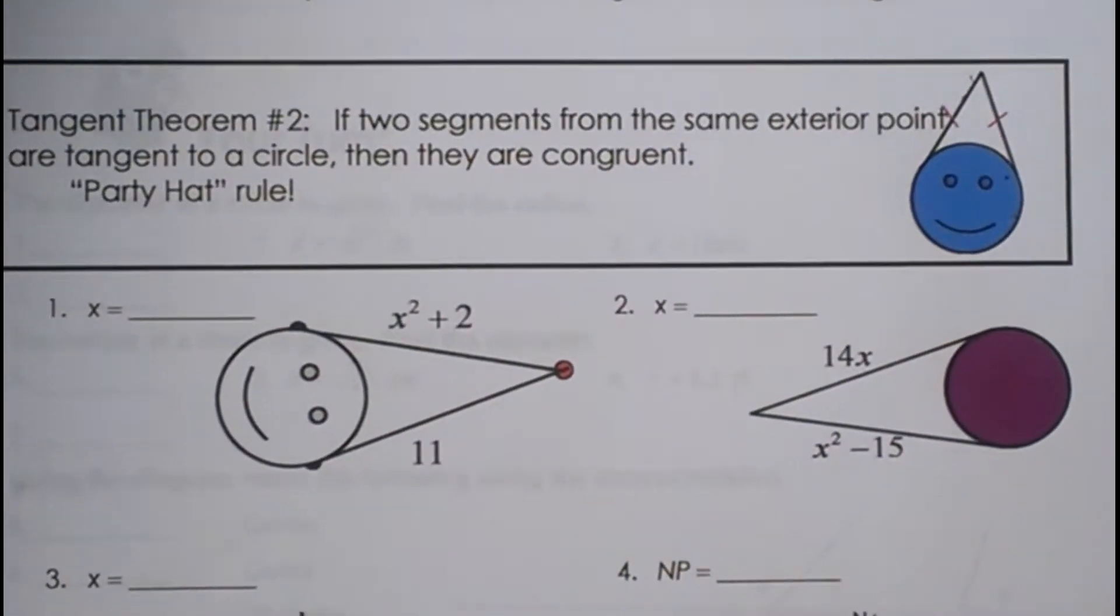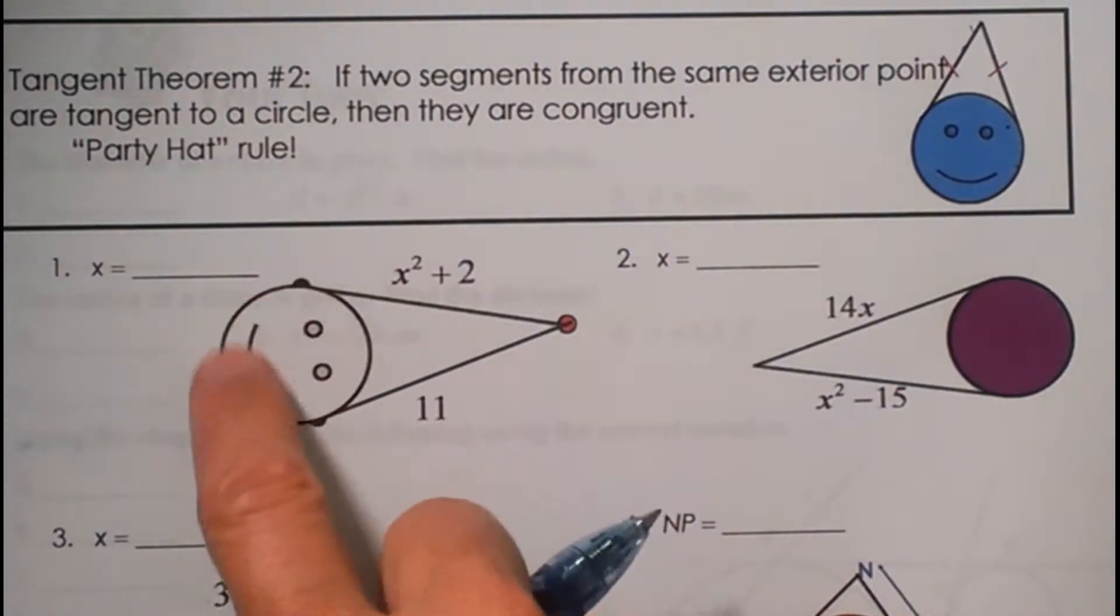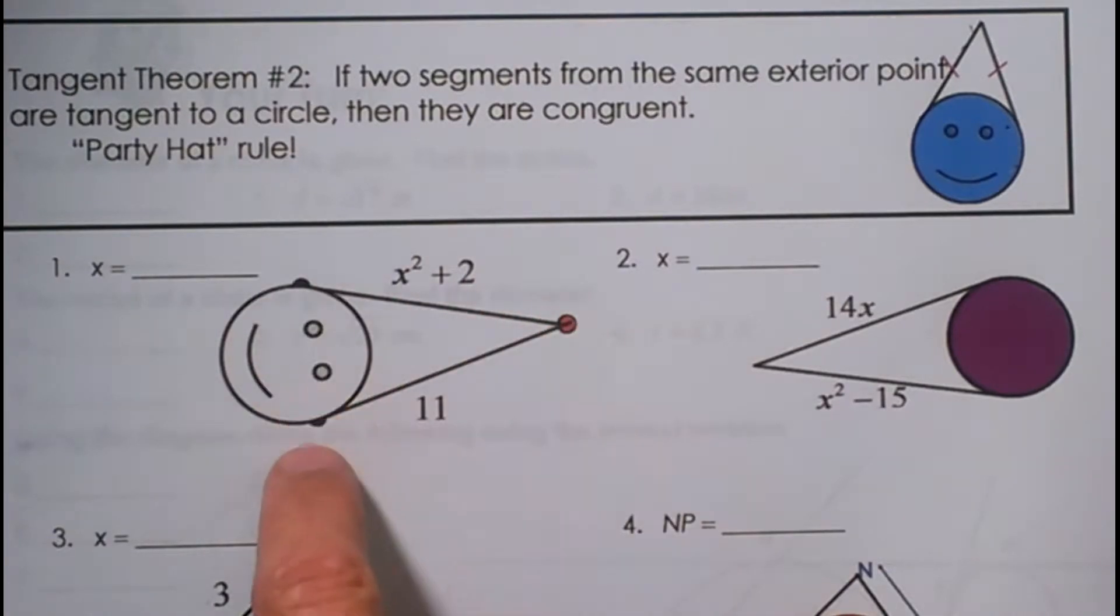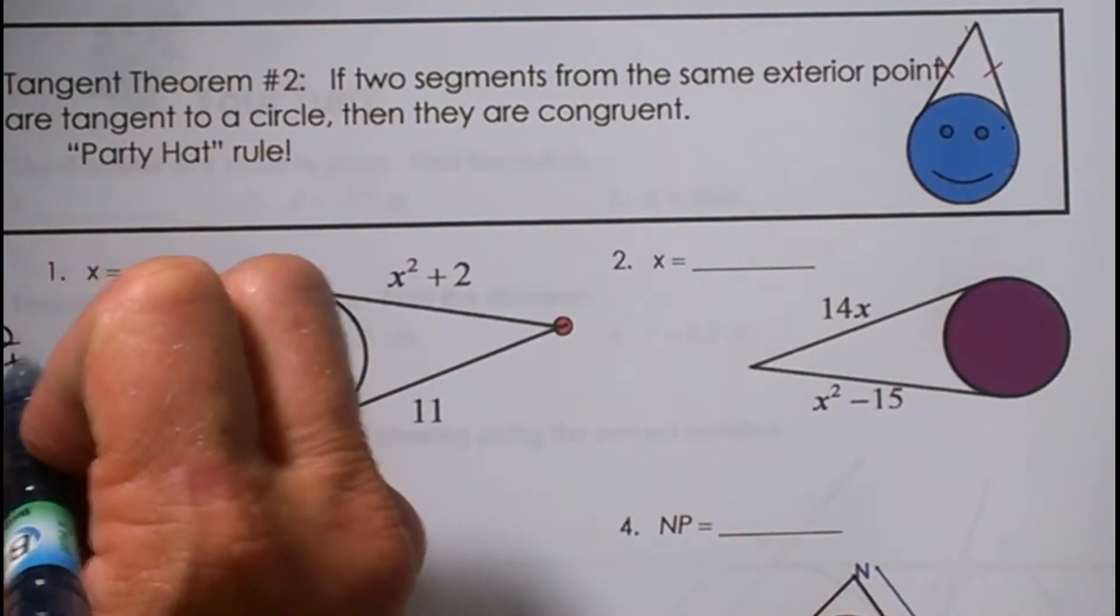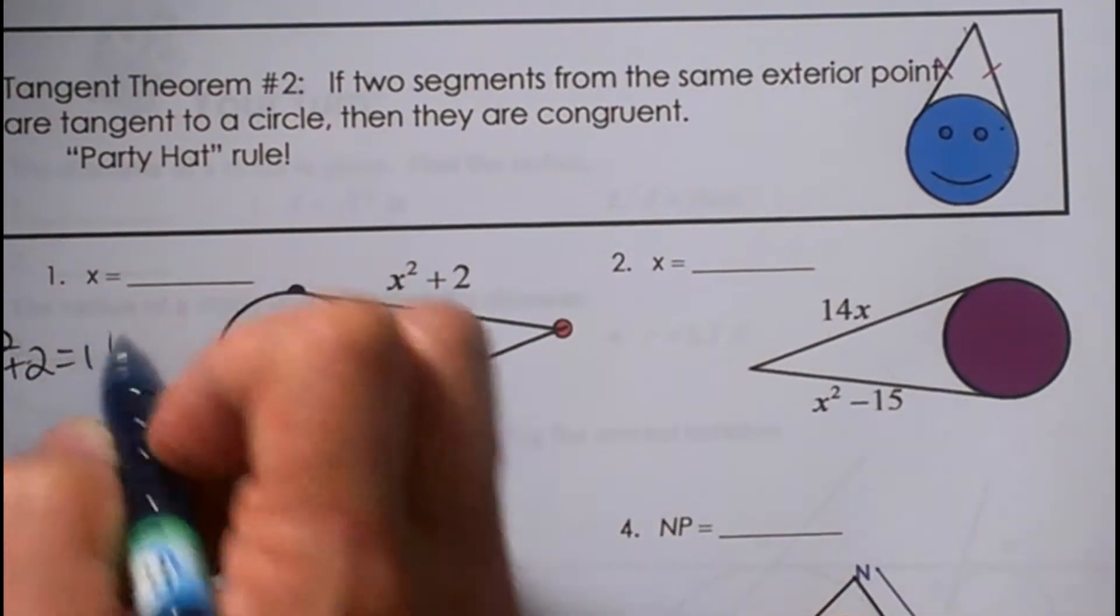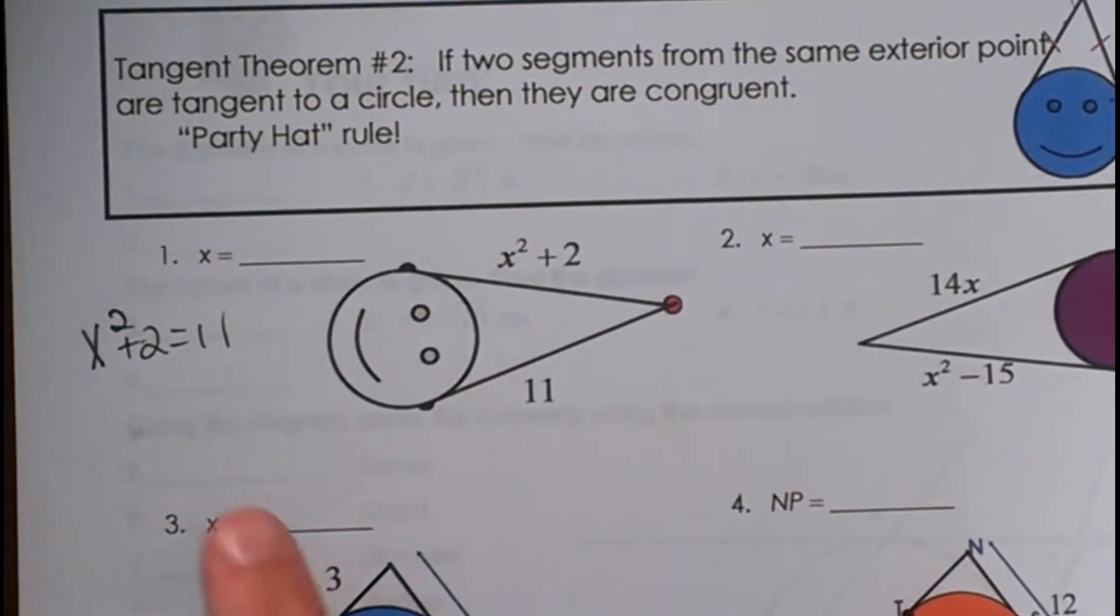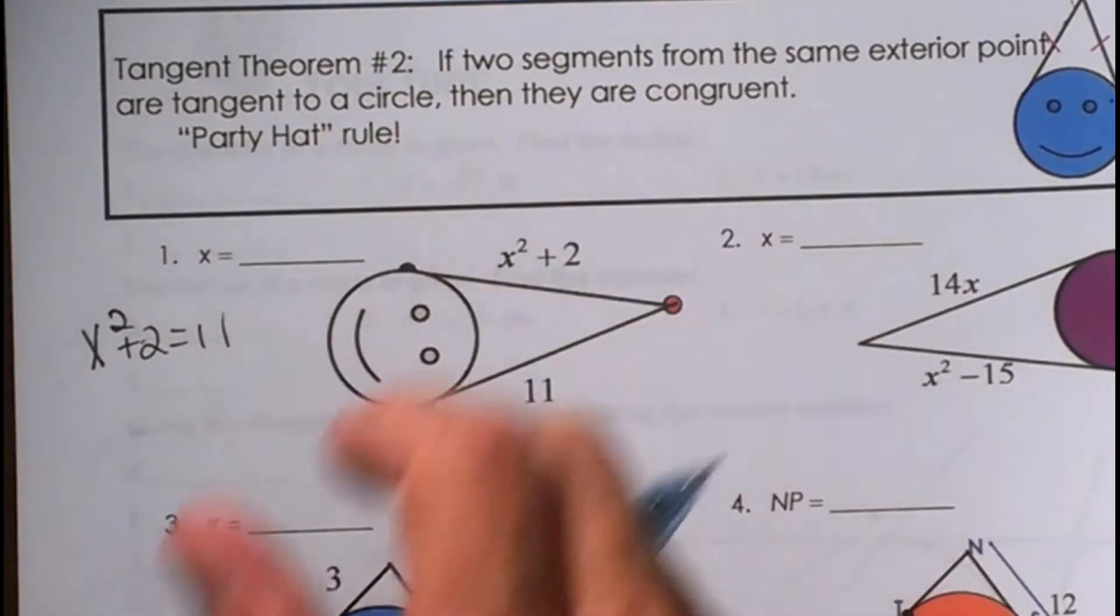So now we're just going to take that and apply it with some algebra. So here we go. We've got the Party Hat Rule going on. We've got our circle, which I like to draw my smiley face in, and draw my Party Hat so you can see the two segments are congruent. So algebraically, I'm just going to set those two segments equal to each other. So we set up x² + 2 is equal to 11, so this segment has to be 11 too, because if that's 11, that's 11.